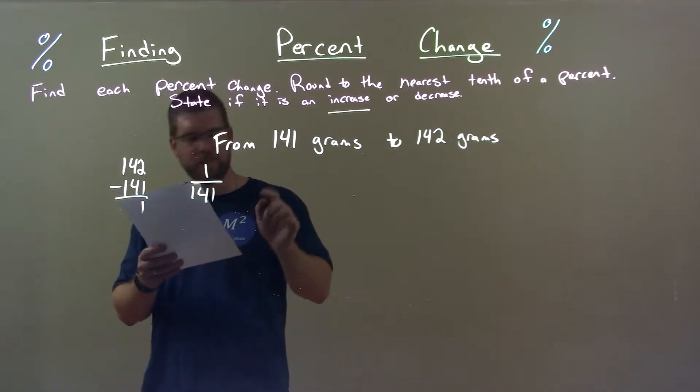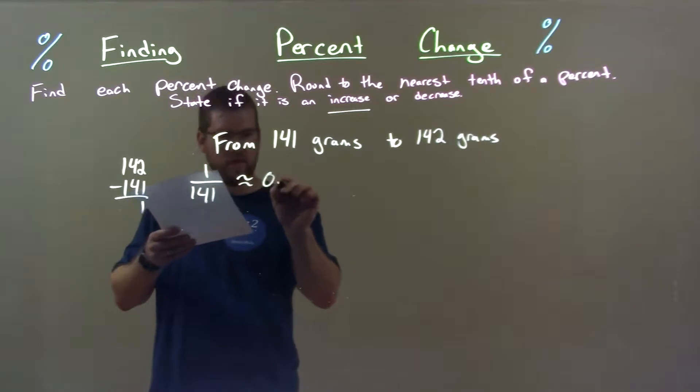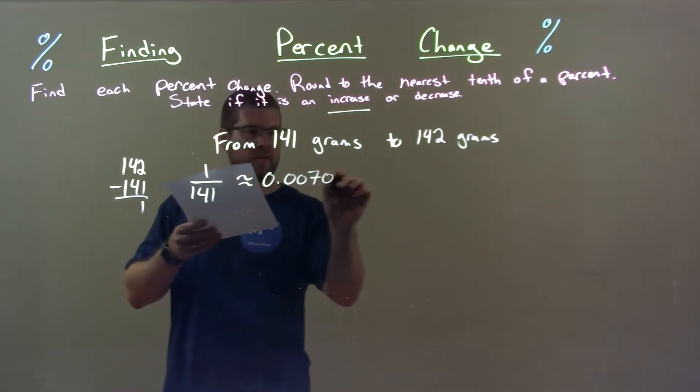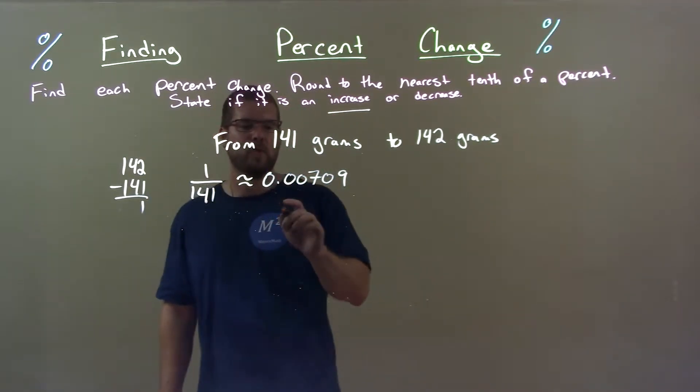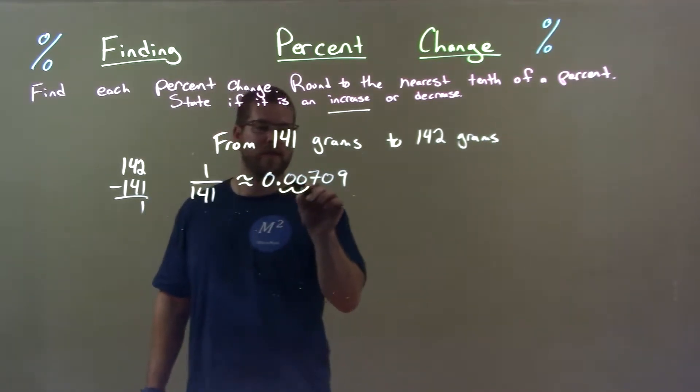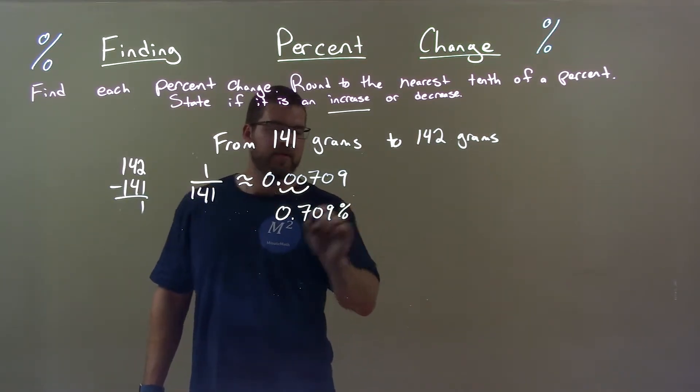Gives us a decimal, approximately 0.00709. Alright, that decimal here needs to be converted to a percent. Decimal point, two spots to the right. Gives me 0.709 percent.